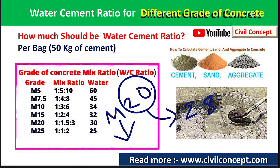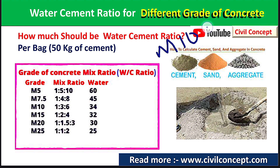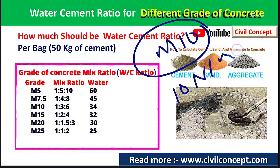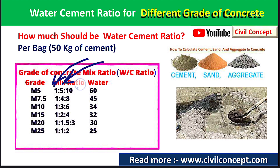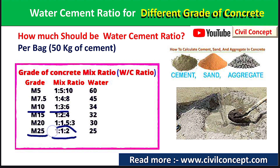The 'M' in M20 stands for mix, and the number represents the compressive strength the concrete will gain after 28 days in N/mm². For example, M10 means the concrete will achieve 10 N/mm² compressive strength after 28 days. Different grades use different mix ratios: M10 uses 1:3:6, M20 uses 1:1:2 — meaning one part cement, one part sand, and two parts aggregate.